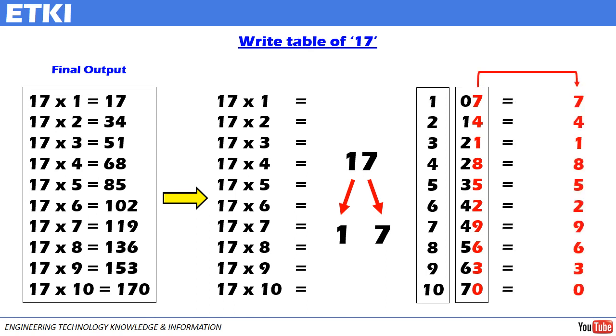Final answer. 7, 4, 1, 8, 5, 2, 9, 6, 3, 0. All the numbers taken from the unit place of table 7. Now add table 1 and numbers in the 10th place of table 7. Final output: 17, 34, 51, 68, 85, 102, 119, 136, 153 and 170.